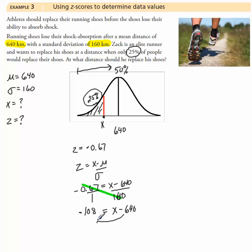And now bring the 640 across. So here, x would equal negative 108 plus 640. I'll make this look like an 8.